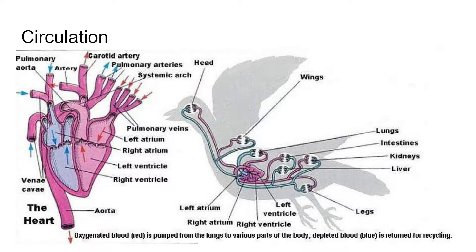For circulation, birds have a four-chambered heart with two atria and two ventricles, very similar to mammals. They have a separate pulmonary circuit and a systemic circuit. The pulmonary circuit goes out to the lungs to get oxygen, and the systemic circuit takes that oxygen to the body and carries CO2 back to the lungs — very similar to our own.